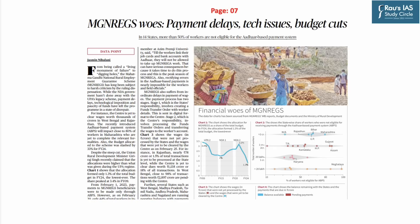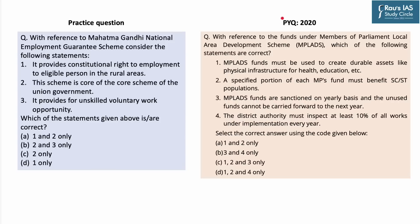The first article is from The Hindu's editorial page, covering the MG NREGA scheme and its basic analysis. Government schemes and their evaluation are extremely important for UPSC. MG NREGA is one of the most flagship programs of the Government of India, providing right to employment to the rural population. A scheme-related question was previously asked on MPLADS, so today's question is based on MG NREGA. Consider the following statement: it provides constitutional right to employment to eligible persons in rural areas — with three key pointers: constitutional right, employment, and eligible persons in rural India.